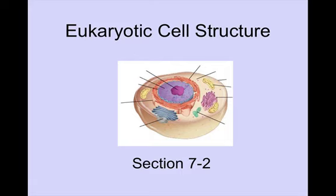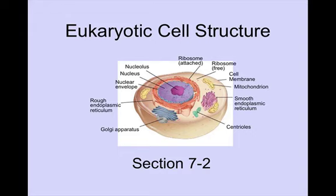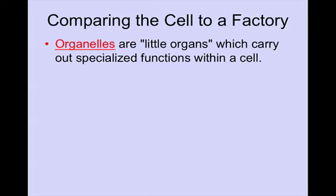Here we are back to work on more notes on the cell. Section 7-2 is going to be divided into two parts to make it easier for you to take notes. We're talking about the structure of the eukaryotic cell. A eukaryotic cell is a cell that contains a nucleus. We're going to learn about the parts and pieces of the cell and their functions. Organelles are little organs which carry out specialized functions within a cell, comparable to organs in a larger organism.